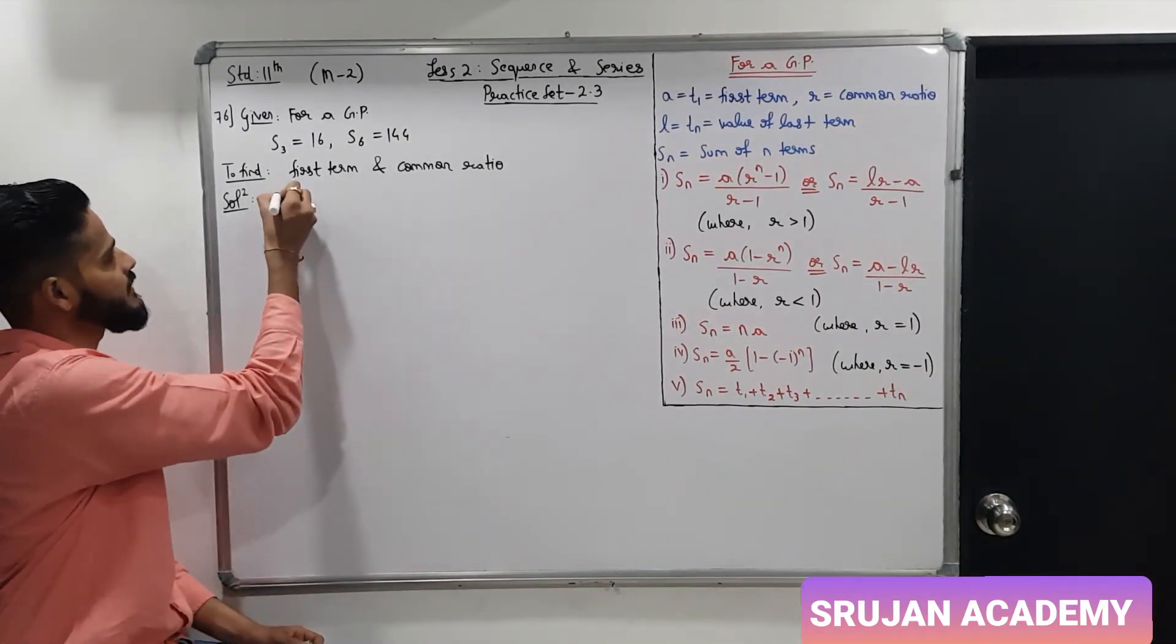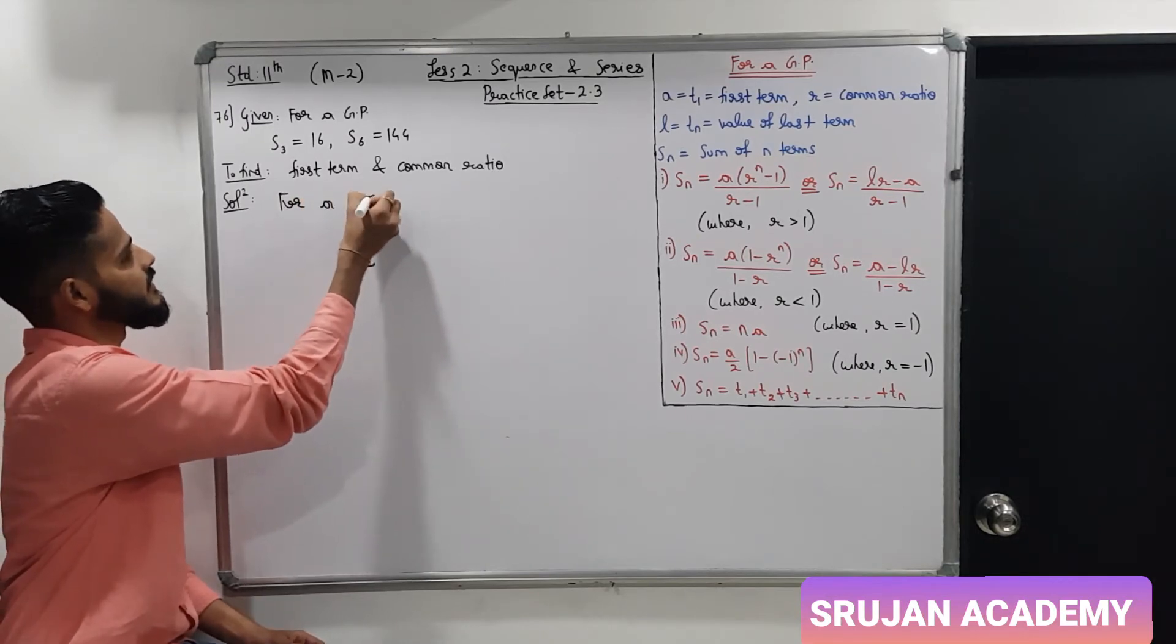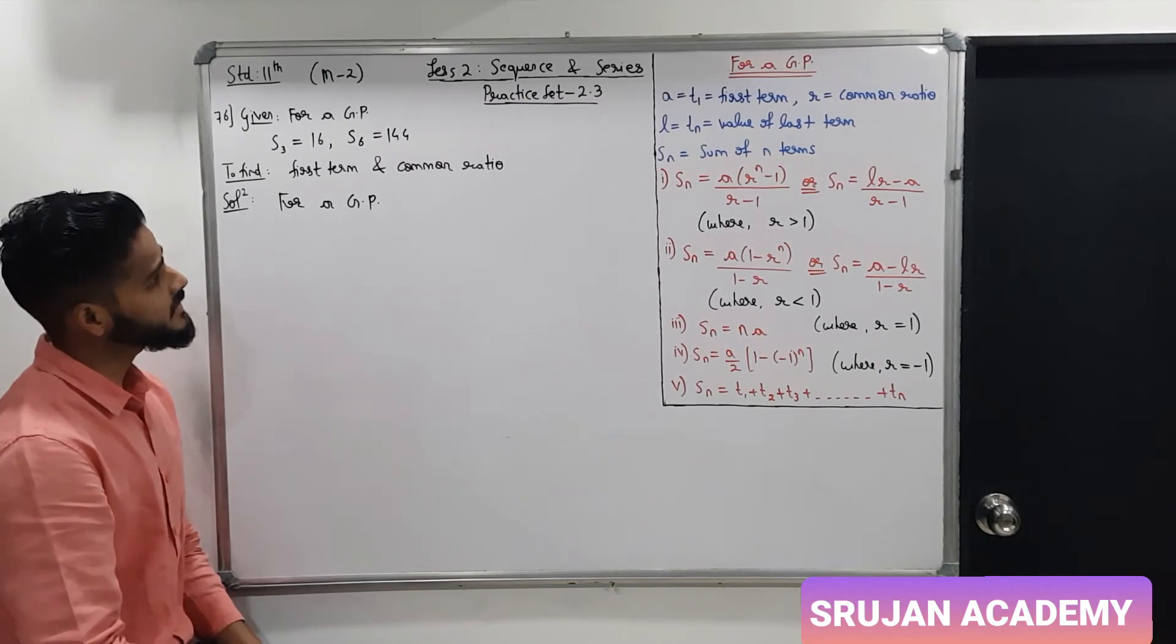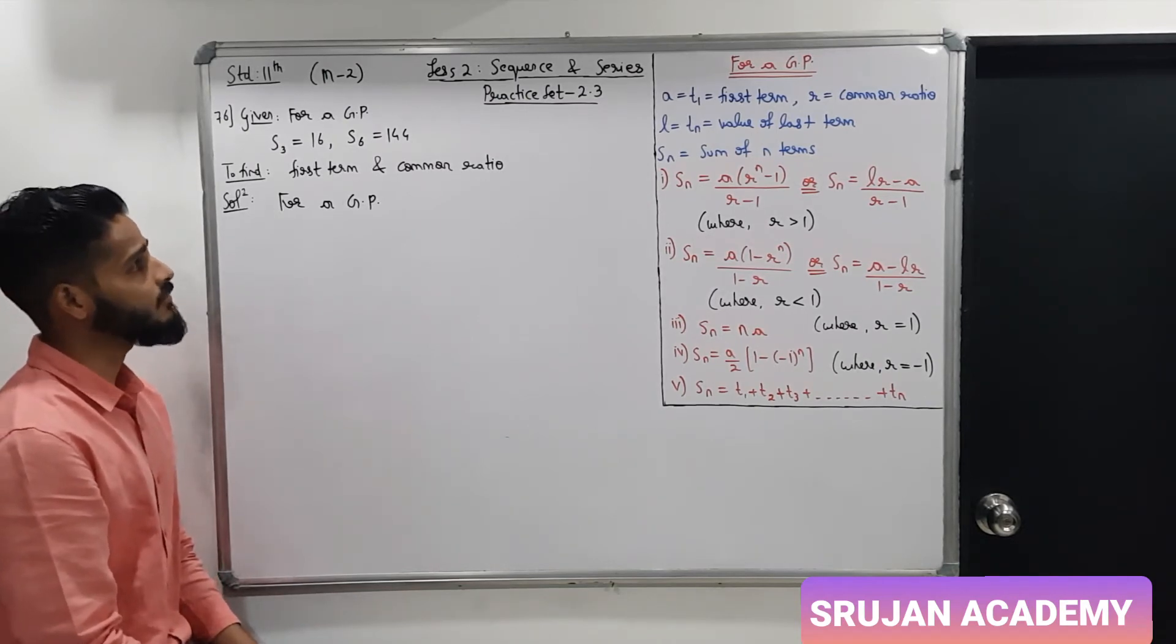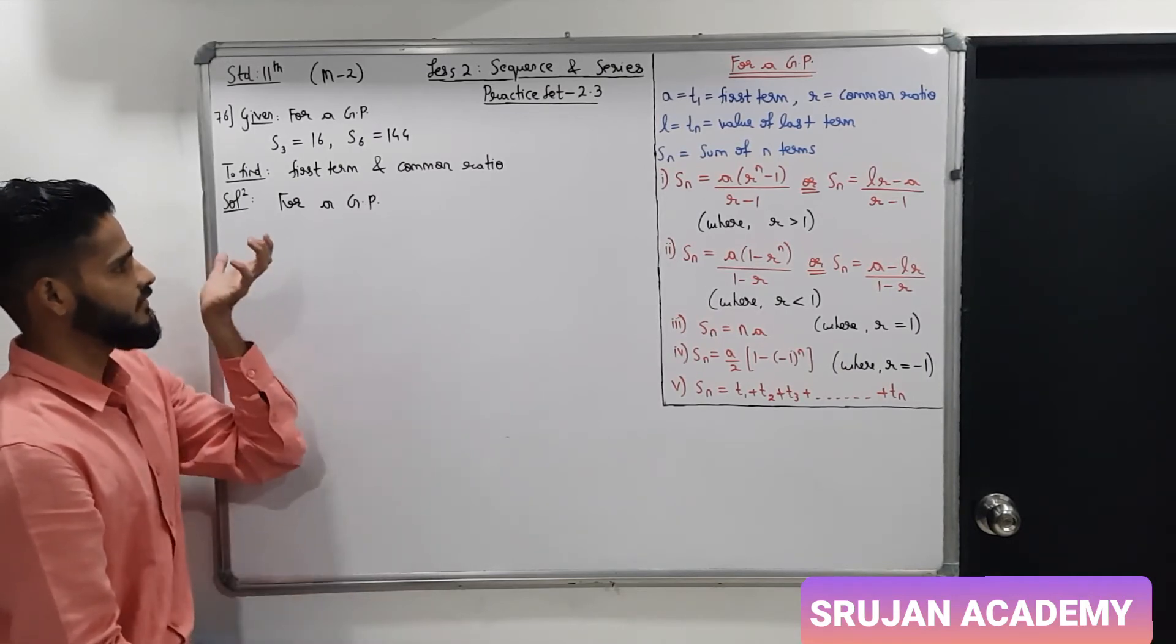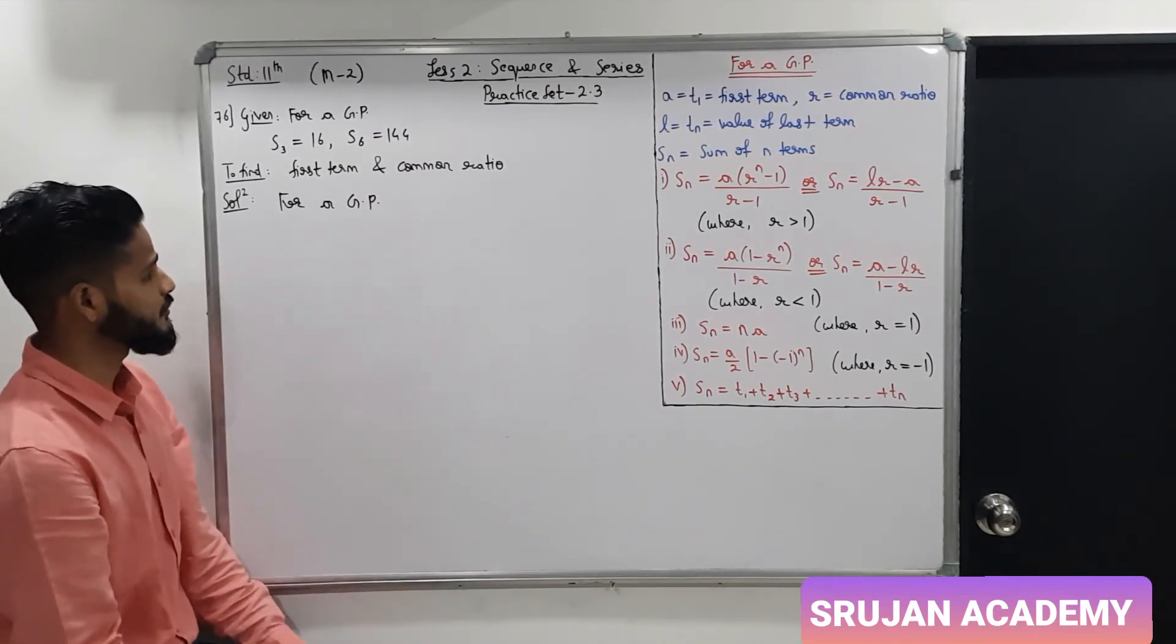76th sum. For a GP, S3, sum of first 3 terms is 16 and S6 is 144, sum of first 6 terms is 144, to find value of the first term and common ratio.